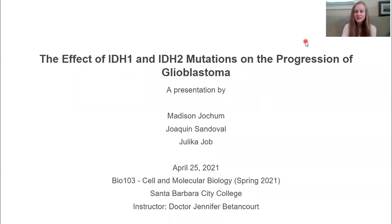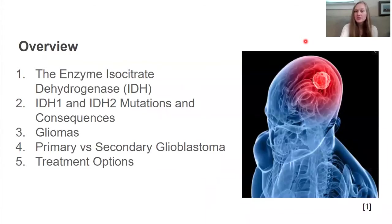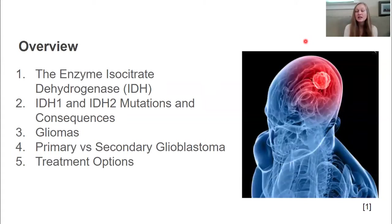Today we are going to discuss the effects of isocitrate dehydrogenase 1 and 2 mutations on the progression of glioblastomas. We'll start with background information on the enzyme isocitrate dehydrogenase, then focus on IDH1 and IDH2 mutations and their consequences. We'll give a brief overview of gliomas and go into primary versus secondary glioblastomas, followed by treatment options and how IDH1 and IDH2 mutations allow for new ways of targeting those brain tumors.